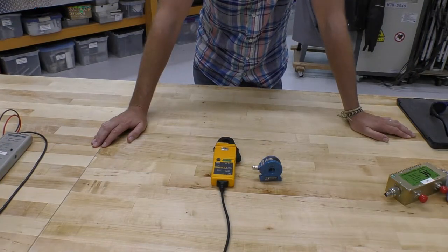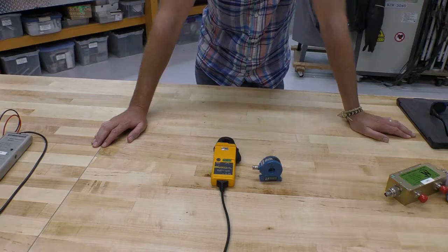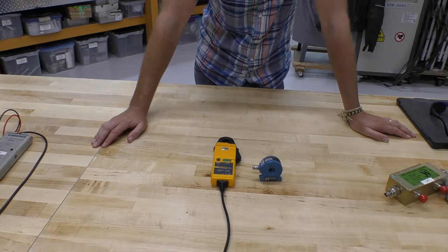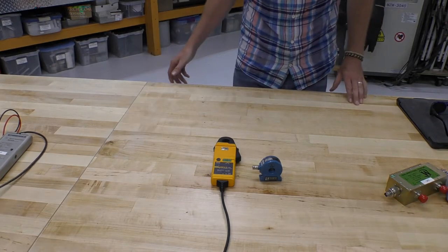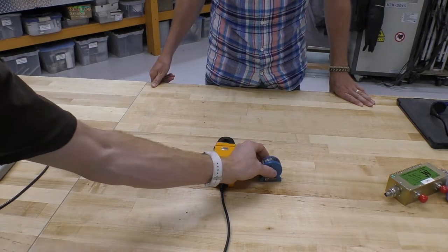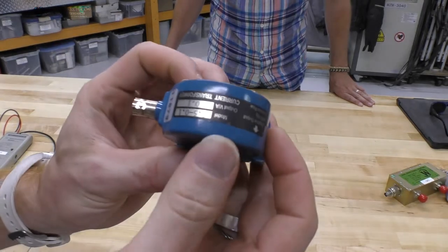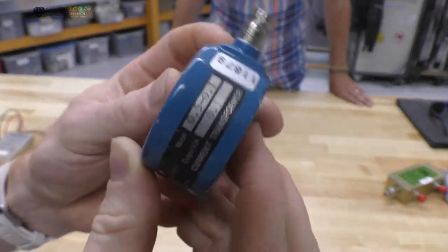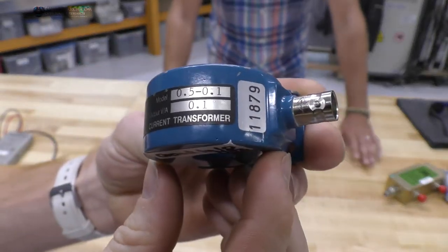So what we have here are two types of current probes, and whenever we're making power measurements, I personally find the current is the hardest thing to measure, and that is because there is such a frequency dependence on the probe you're using.